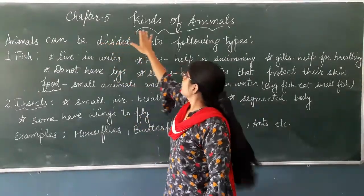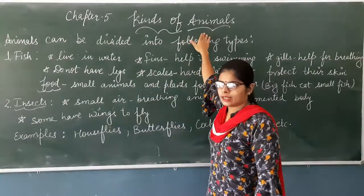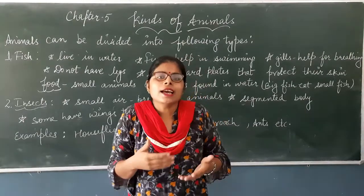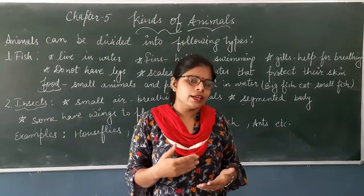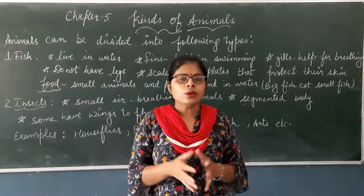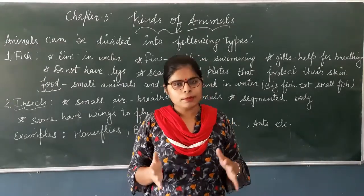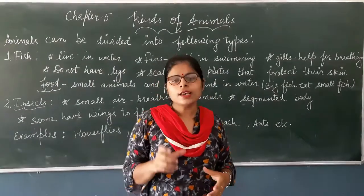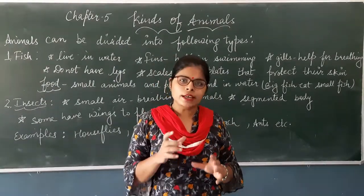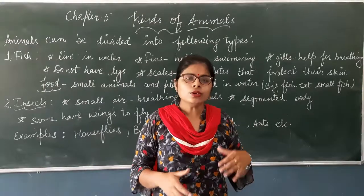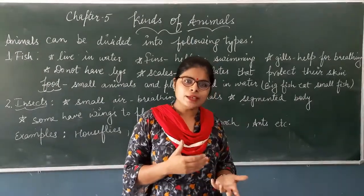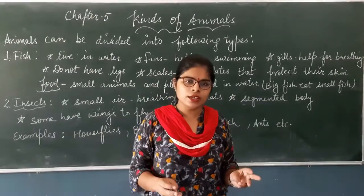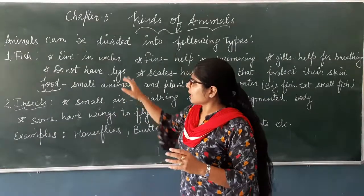Today we start Chapter 5: Kinds of Animals. Before knowing the kinds of animals, let us understand that animals have different food habits and different ways of living. Their habits are different — they eat different food and live in different places — and accordingly their body shape develops. There are many dissimilarities among them, but also some similarities, such as they have a head, a trunk, and a tail.